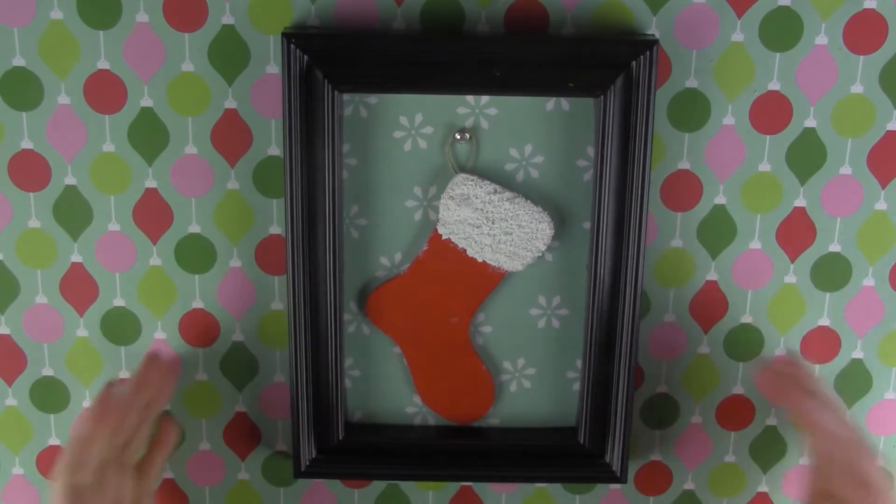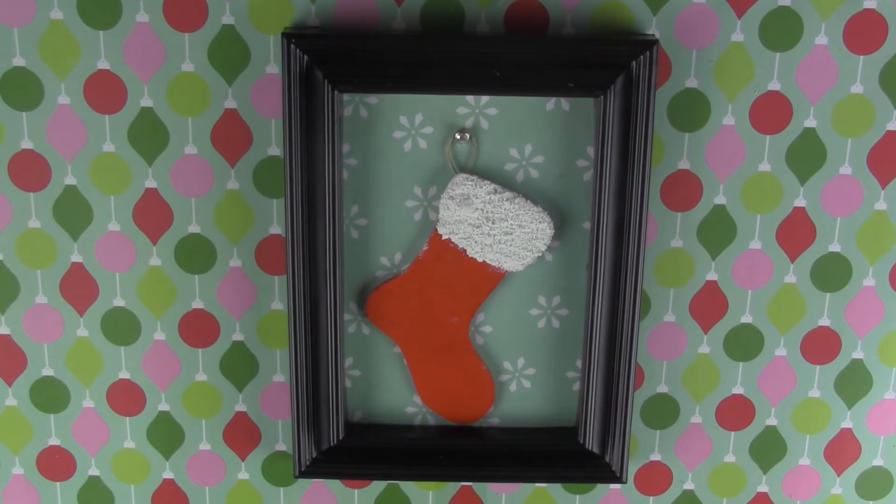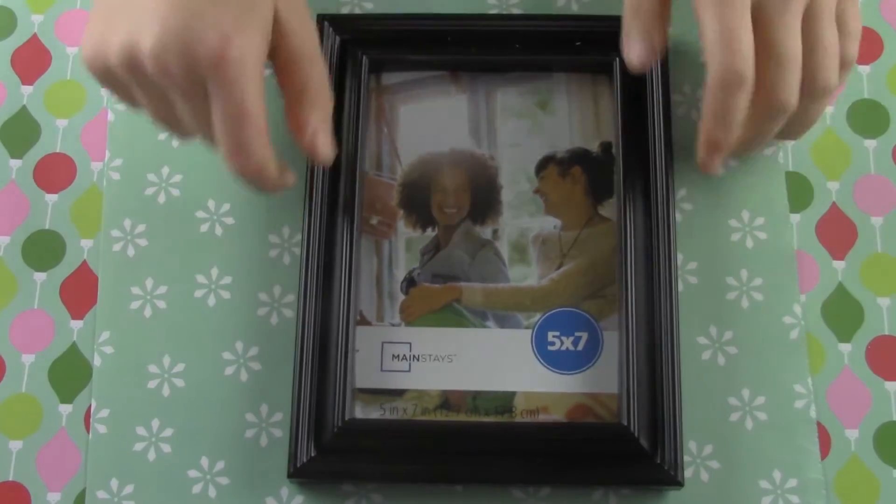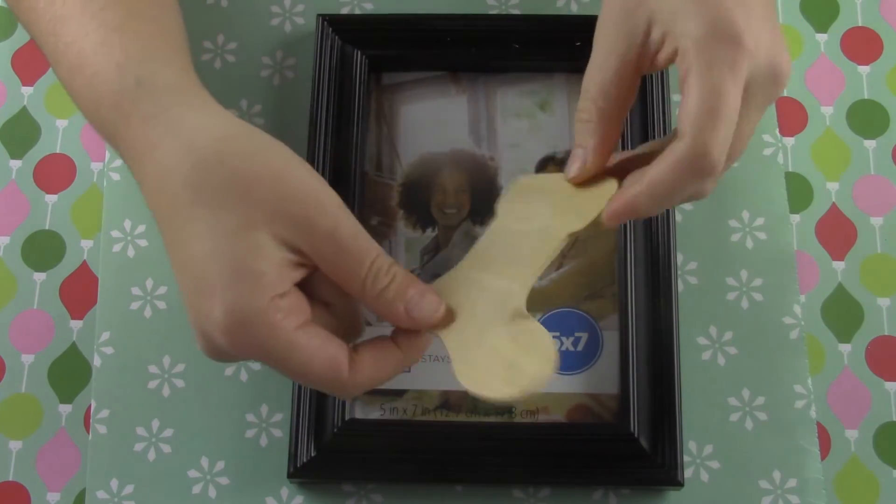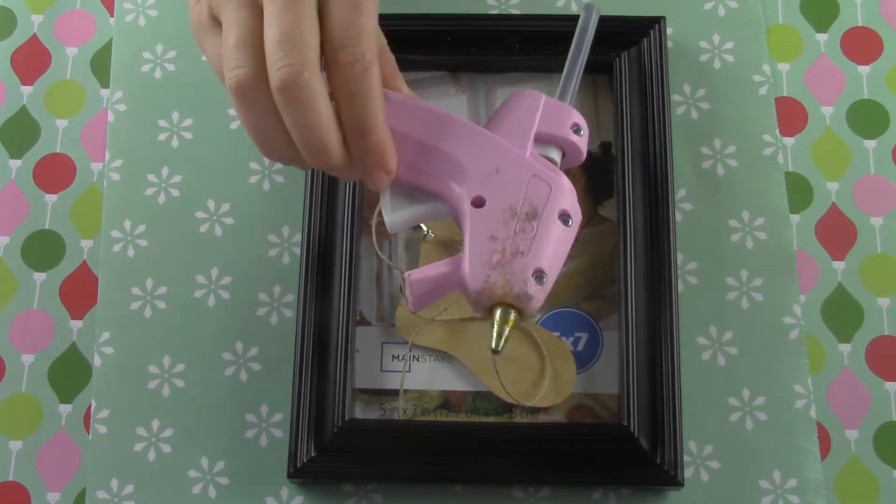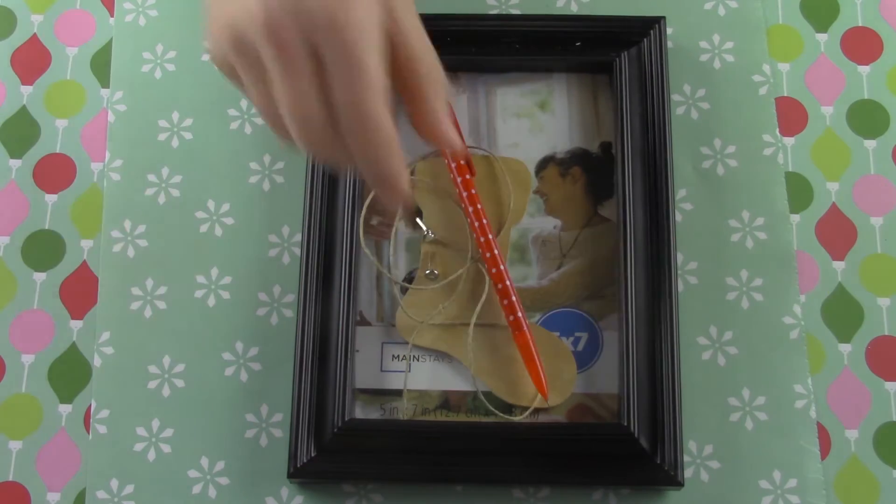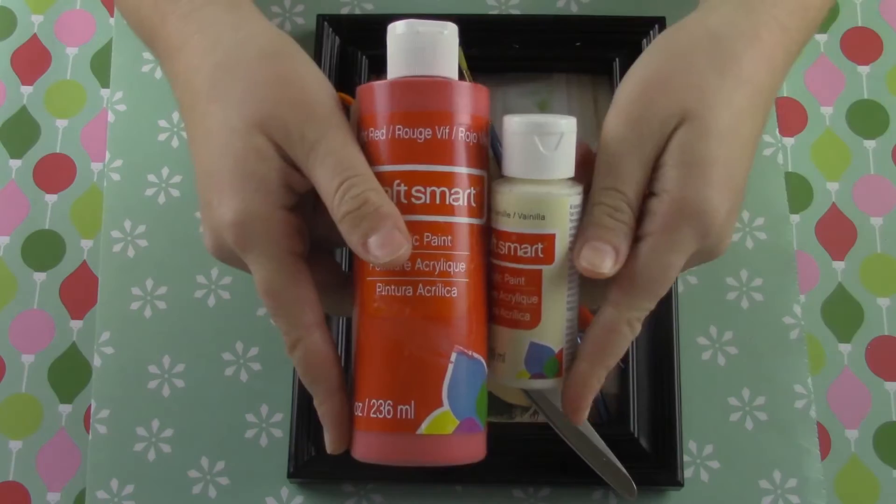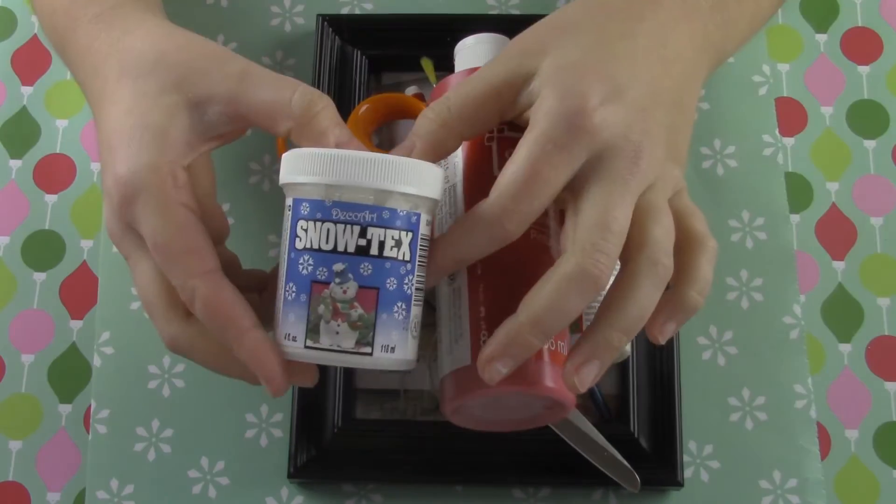This next picture frame is pretty cute too. It's just a Christmas stocking made out of a wood cutout. For this you're going to need a piece of cardstock, a picture frame, a cutout of your choice - I'm using a stocking, a piece of string, a flat back or bead you can use as a nail, glue gun and glue stick, a pencil, a pair of scissors, a paintbrush, red and white paint, and some snow tex if you want.